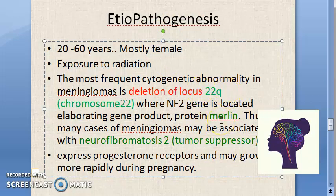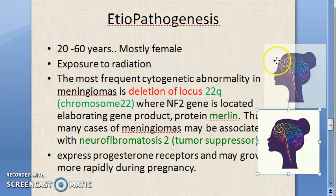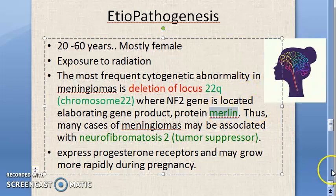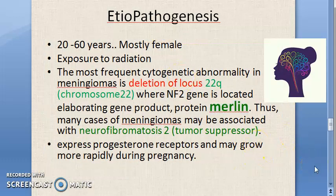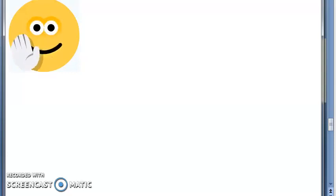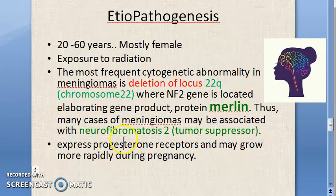The 22q locus gets deleted. This is where the NF2 gene - the neurofibromatosis 2 gene - is normally present. This is a tumor suppressor gene, which is a good thing. But due to deletion of this locus, there is no NF2 gene in these people, meaning the merlin protein coded by this gene won't be present, and these people are very prone to developing meningioma.